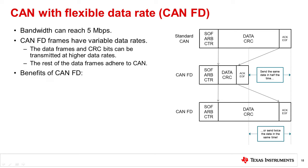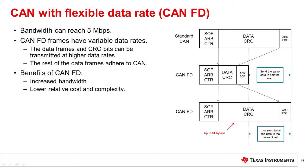Benefits of CAN FD include increased overall bandwidth. Not only does CAN FD permit faster data rates, but it also allows up to 64 bytes of data to be transmitted in a single message, rather than the original limit of 8 bytes imposed by traditional CAN. CAN FD also features lower relative cost and complexity, with a small incremental cost to increased bandwidth and less complexity than implementing major network changes such as FlexRay or Ethernet. CAN FD also allows for fast end-of-line flash programming of modules in ECUs, reducing manufacturing costs.